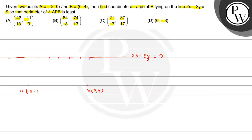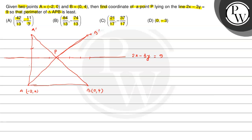If we use a mirror image — that is, reflect point A across the line — then by the mirror image approach, the minimum distance AP plus PB equals the straight-line distance from the mirror image of A to B, passing through P on the line. The distance from the mirror image to B gives us the minimum value.